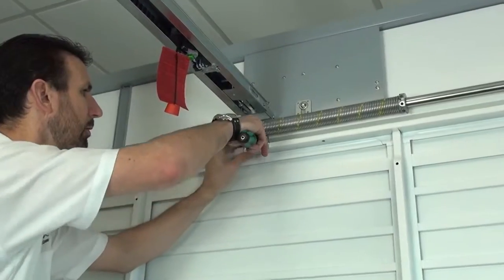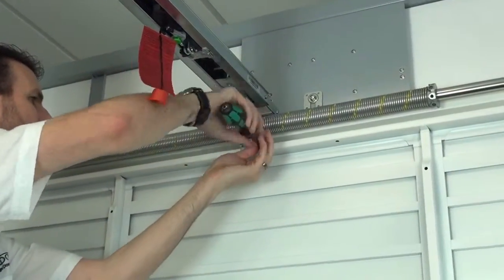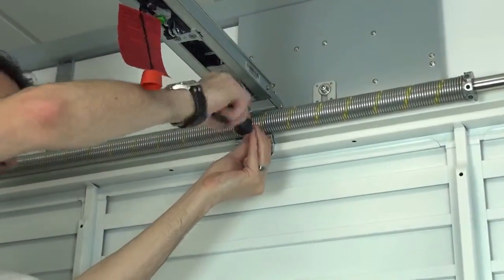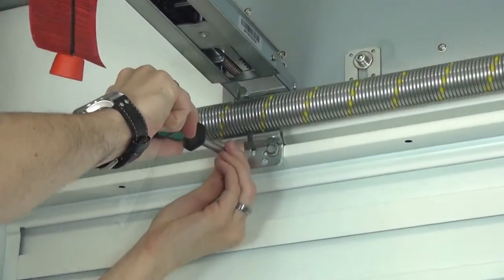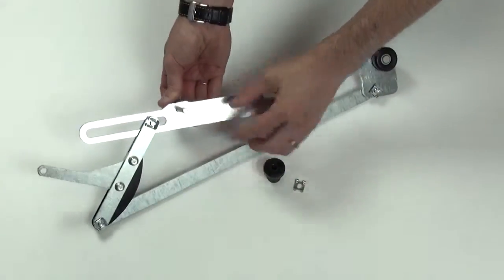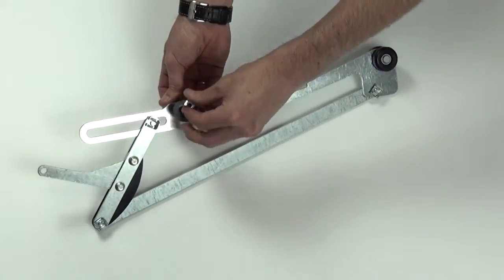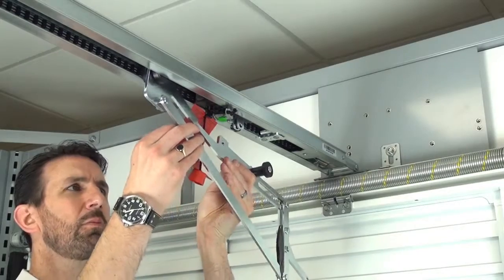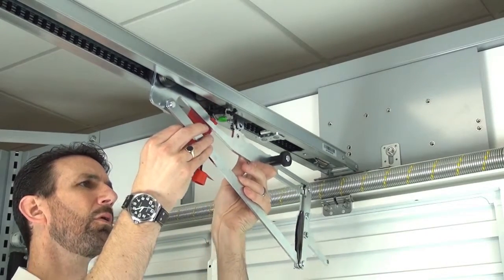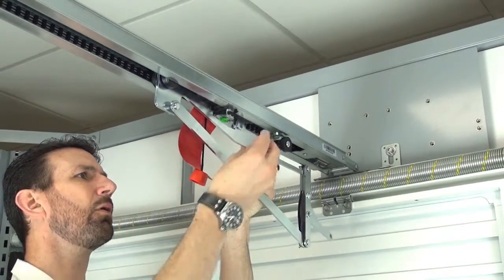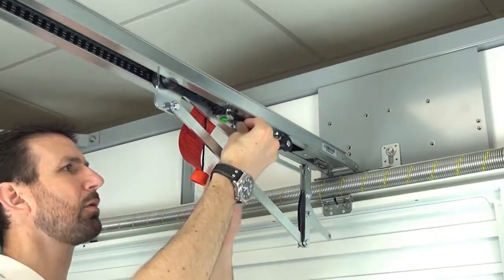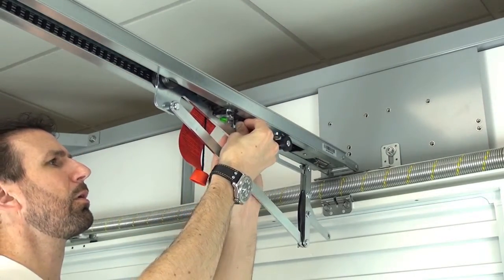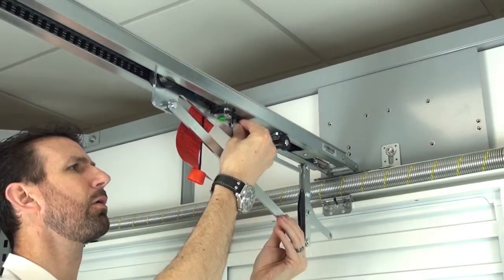Take the activating arm bracket and screw it into the top of the door using four 10mm hex head screws. Assemble the activating arm as shown in the instructions. Push the rear guide wheel up into the boom track and attach the activating arm to the slide carriage by inserting a pin and spring clip through the mounting point on the slide carriage.